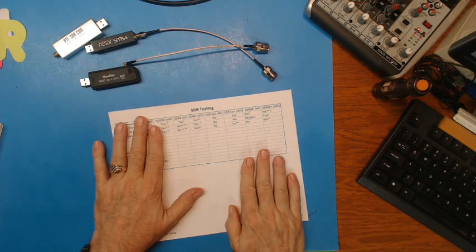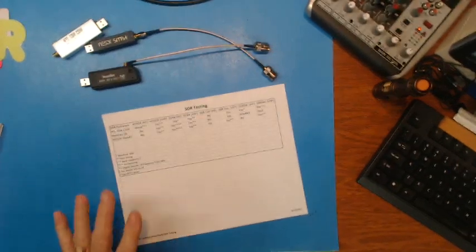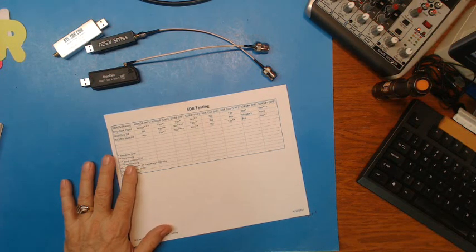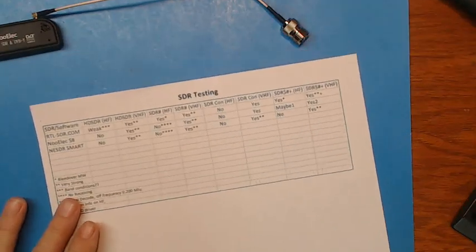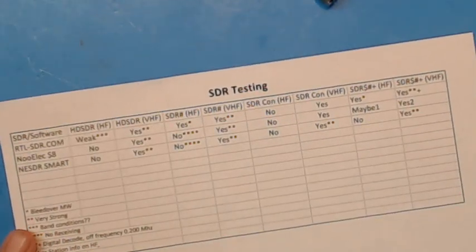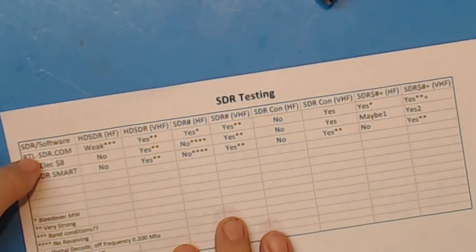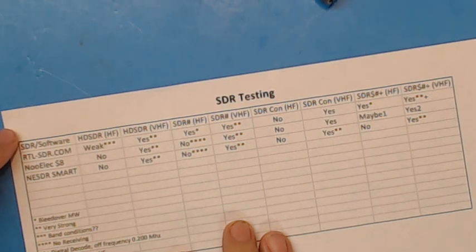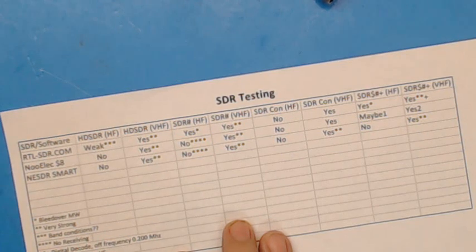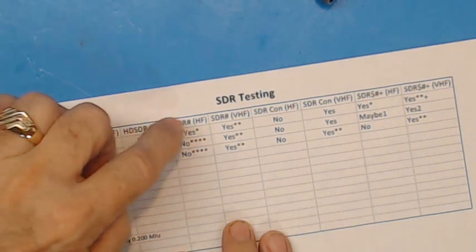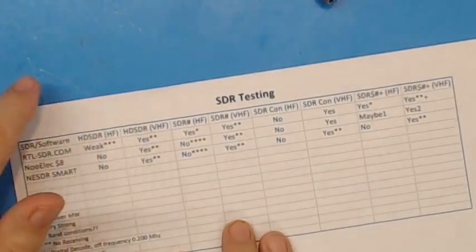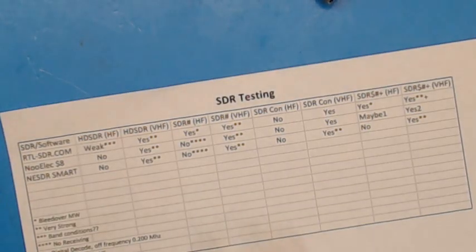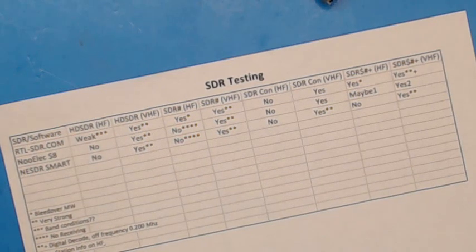So here are the results. Let me zoom in. I'm running at lower resolution so I can zoom in further, only running at 480p. That allows me to zoom in really close. Down here is the three dongles.